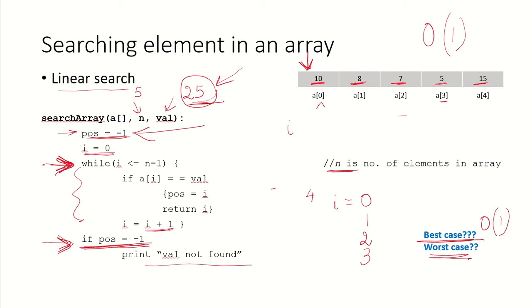What would be the worst case? The worst case is that either the element I was looking for was at the last position, or maybe it was not present in the array at all. In that case, I have been looking at and making comparisons with all the elements of the array. So in that case, my time complexity would be order of n — O(n).